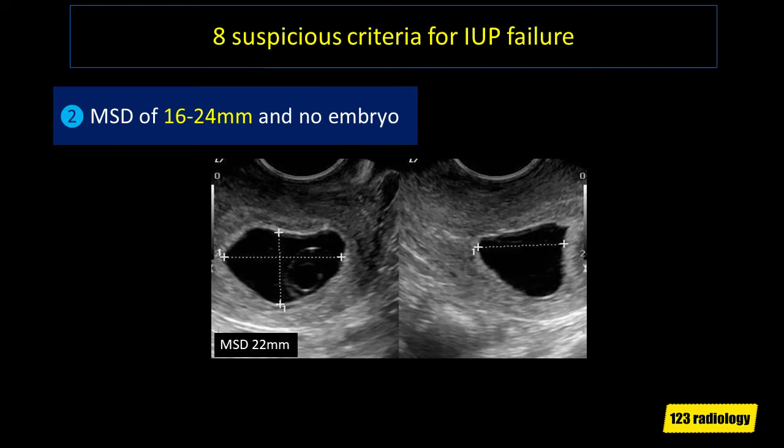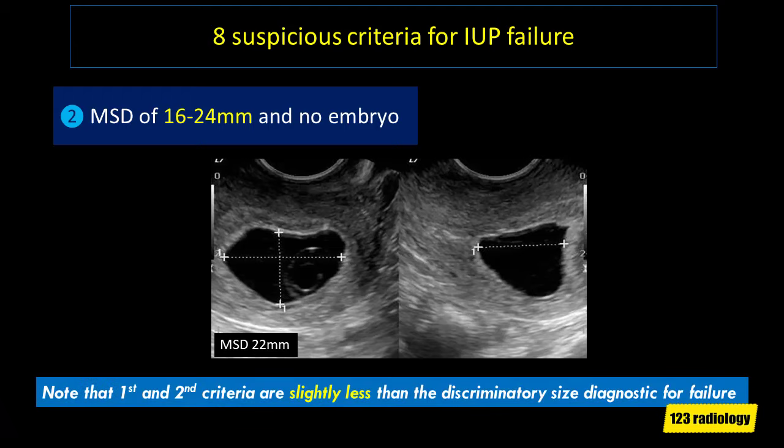The second suspicious criterion is a mean sac diameter of 16 to 24 mm with no visible embryo — slightly less than the 25 mm discriminatory size diagnostic for failure. As you can see on the image, the mean sac diameter is 22 mm with no visible embryo — this is suspicious for pregnancy failure and follow-up ultrasound study is highly recommended. Note that the first and second criteria are slightly less than the discriminatory size diagnostic for failure.